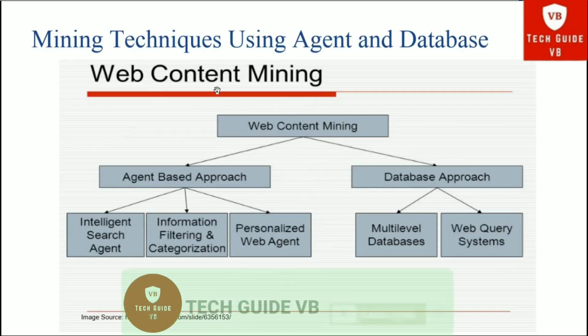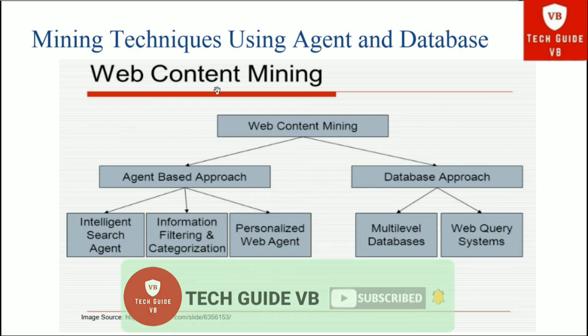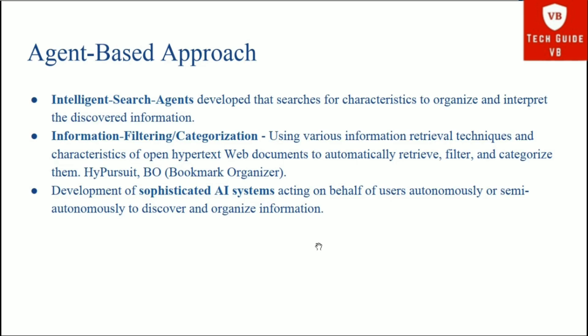Web content mining basically deals with two approaches: the agent-based approach and the database approach. In the agent-based approach, there are intelligent search agents, information filtering and categorization, and personalized web agents. In the database approach, there are multi-level databases and web query systems.